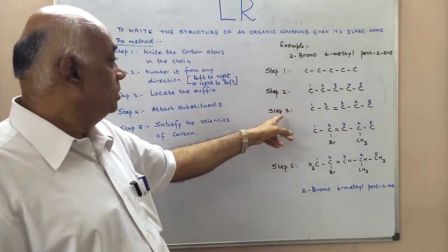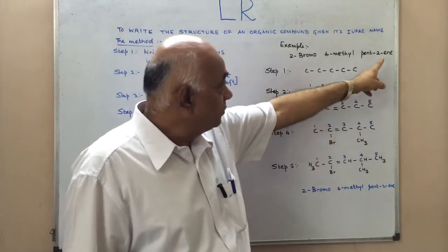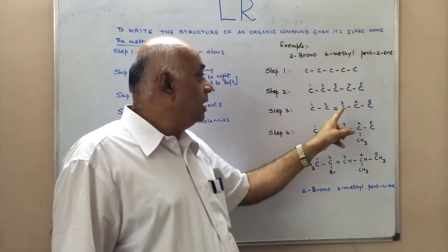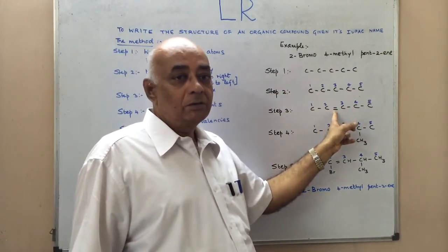Step 3, we locate the suffix. The suffix is ene and it is at the second carbon atom, and therefore we have put a double bond there.